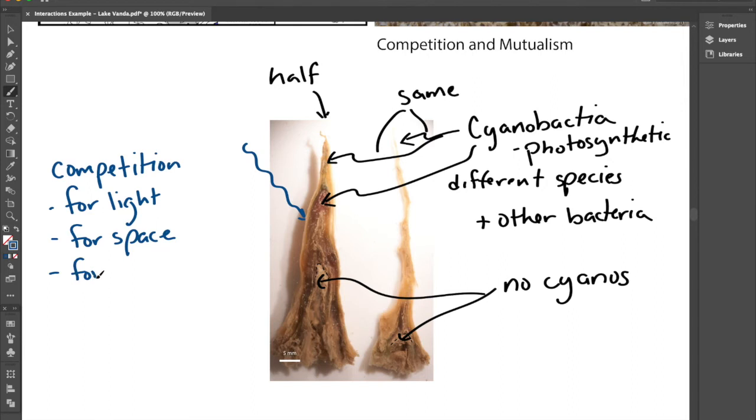We also have competition for nutrients. There are very few nutrients in the water, but in this interior of the mat, the organic matter is getting broken down by bacteria that aren't cyanobacteria and we think that it's releasing nutrients and those nutrients are diffusing into this overlying mat, helping the cyanobacteria grow.